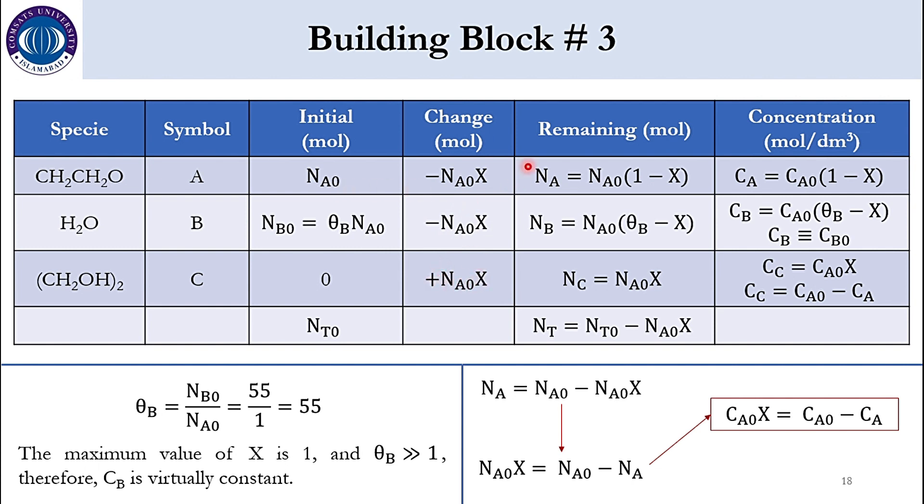Once you sum these the remaining will be N is equal to NA0 into 1 minus x. NB is equal to NA0 θB minus x. N of C is equal to NA0x. And once you sum all of these N of T is equal to NT0 minus NA0x. We have solved all these steps in our previous lectures as well. This table was solved in our stoichiometry chapter as well. So we are using just concept of that chapter here as well.